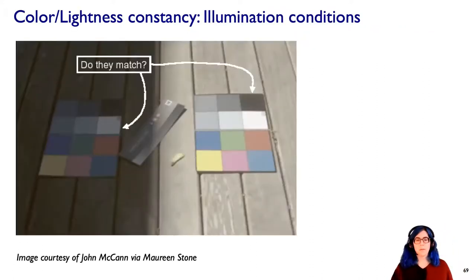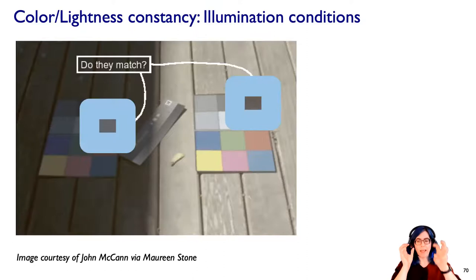This is just one example of the more general principle, which is we see very different things because the human visual system is doing relative perception. Here is a photograph, an actual real-world photograph of two different identical color swatches. John McCann took this image and I got to it courtesy of Maureen Stone. It's a dumb question to say do they match, right? No. Here's the white one and here's the black one. Of course they don't match. But if I actually mask out the surrounding context, in fact, that's the same color.